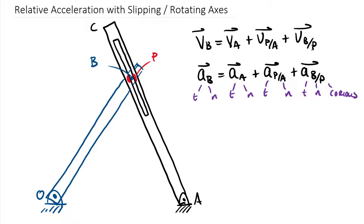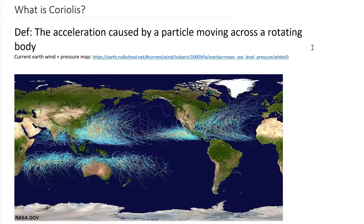Let's take a look a little bit more at this Coriolis acceleration. This Coriolis acceleration is the acceleration caused by a particle moving across a rotating body. I'll tie that over into our four-bar linkages and also possibly into additive motion. But fundamentally, one of the things we can think about as particles moving across a rotating body would be weather systems.